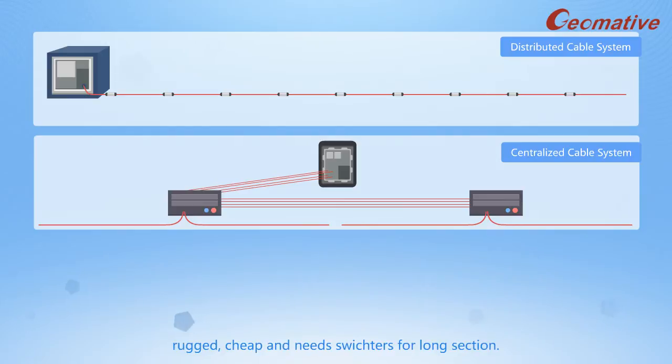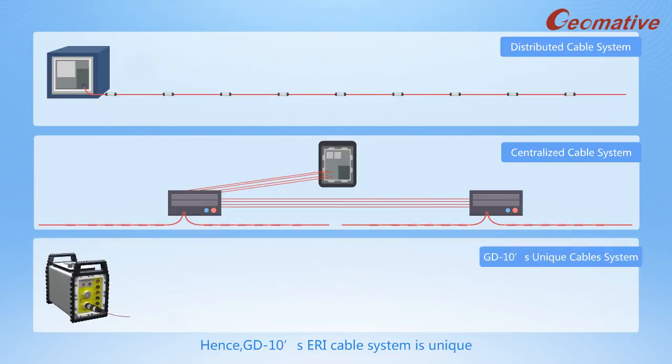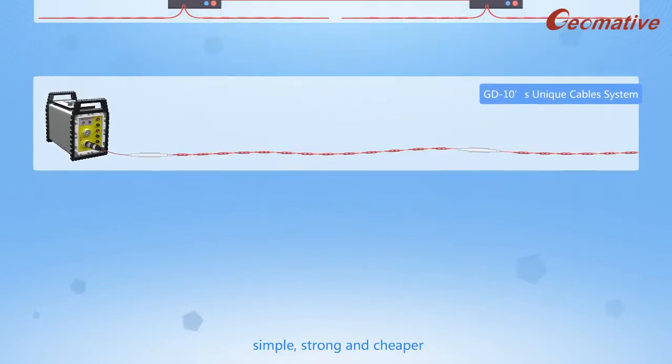Centralized cable systems are rugged and cheap but need switch turns for long sections. Hence, GD-10's ERI cable system is unique, simple, strong, and cheaper.